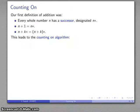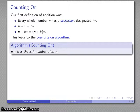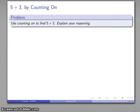The counting on algorithm for addition is n plus k is going to be the kth number after n. So for example, let's take a look at the problem 5 plus 3, and we'll have the problem use counting on to find 5 plus 3.